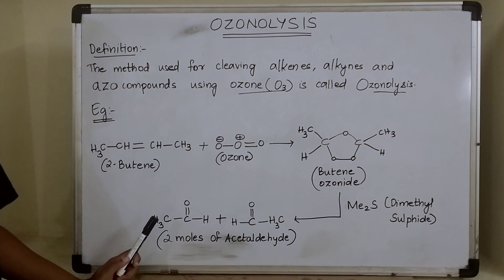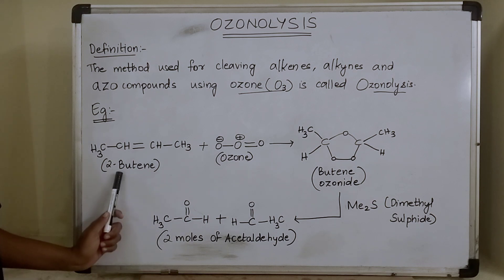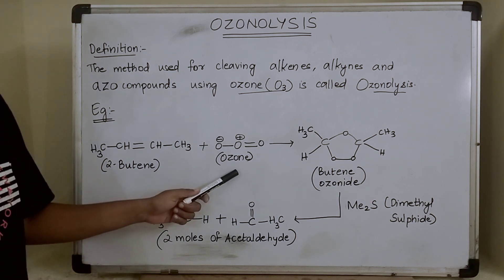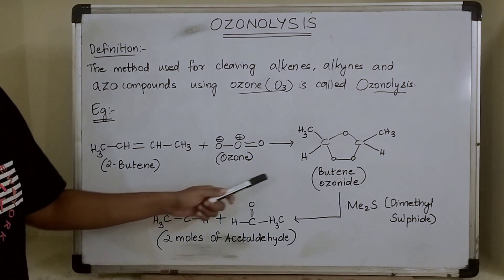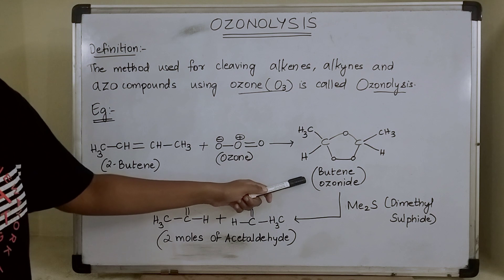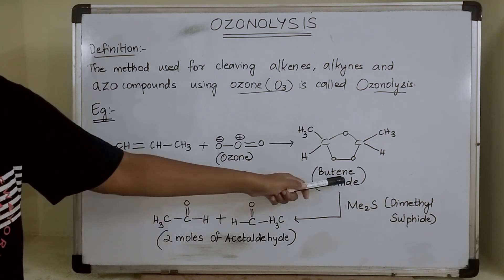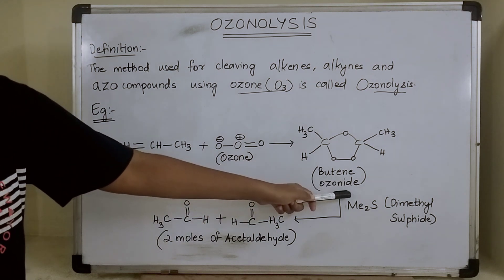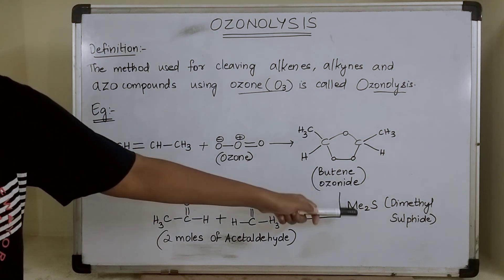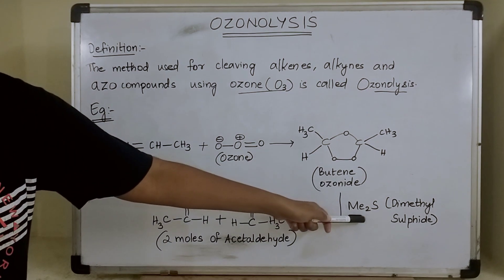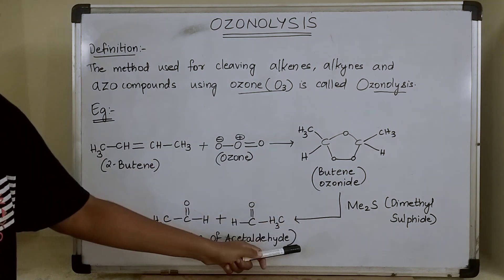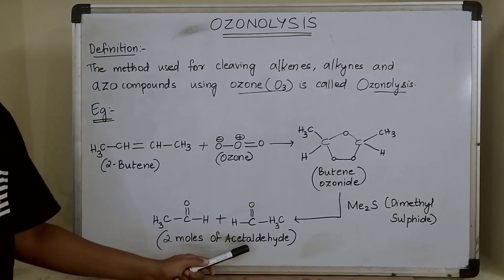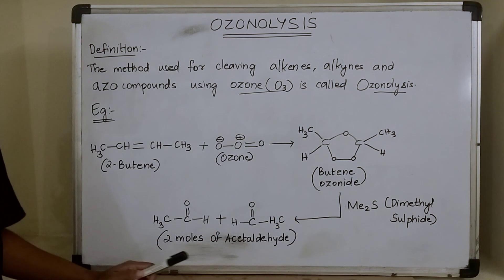Now let us see an example. Here 2-butene when it reacts with ozone, it gives a structure called butene ozonide. This butene ozonide when it reacts with dimethyl sulphide, it gives 2 moles of acetaldehyde.